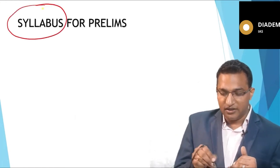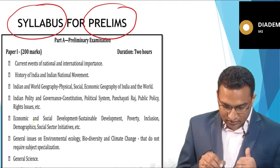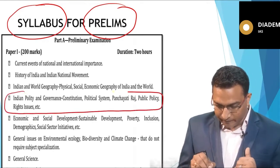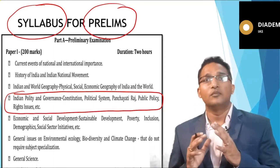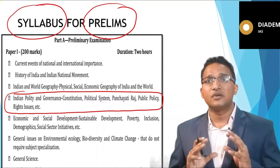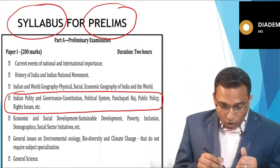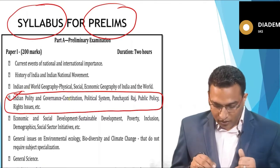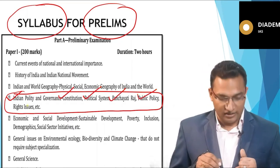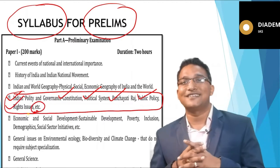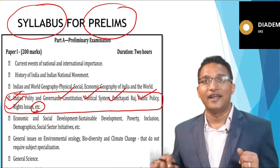First of all, we need to know what is the syllabus of UPSC for polity from the prelims perspective. This syllabus has certain keywords — it is indicative in nature and does not clearly indicate the depth up to which the questions can be asked. The syllabus covers Indian polity and governance, Constitution, political system, Panchayati Raj, public policy, rights issues, etc. That word 'etc' is very dangerous because they can include anything by writing it.